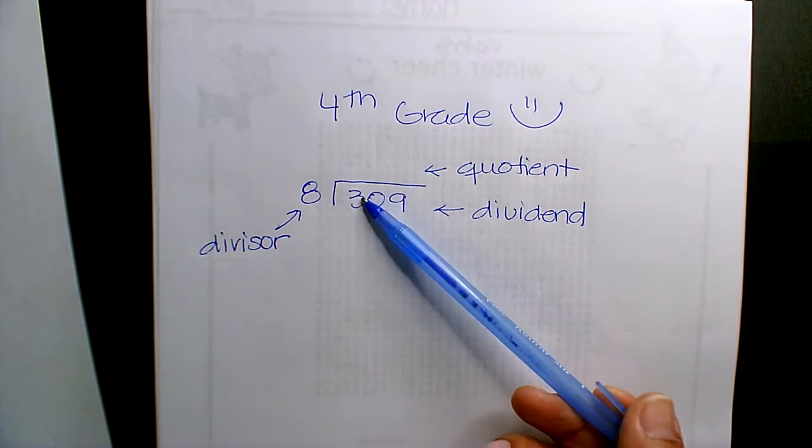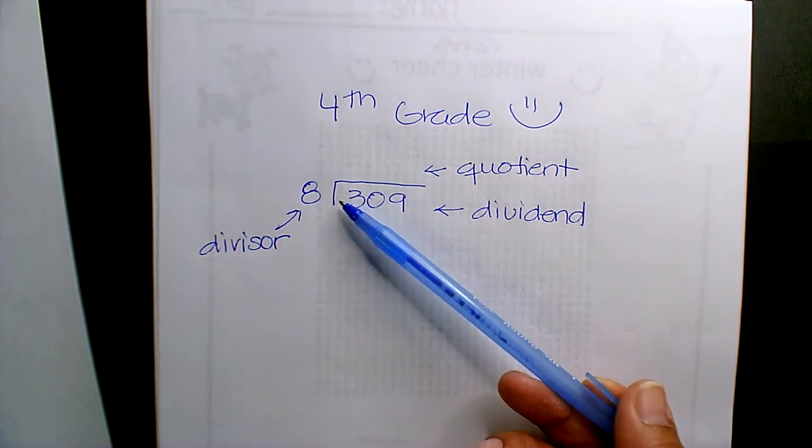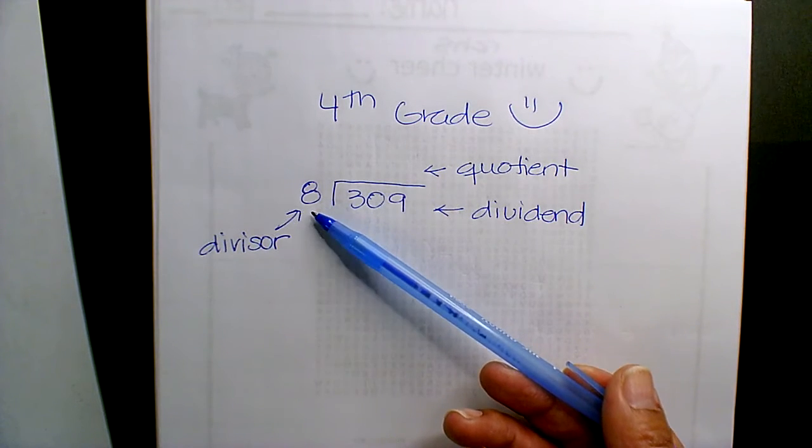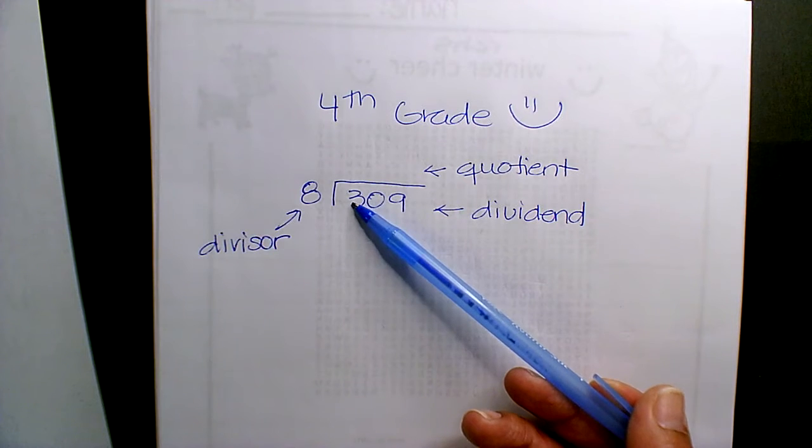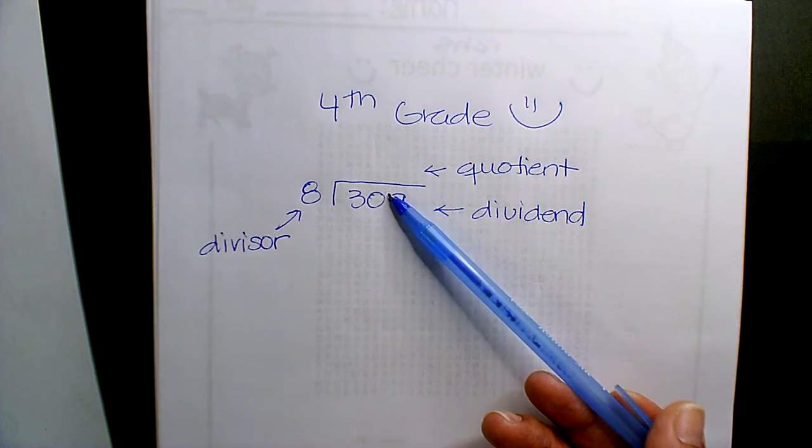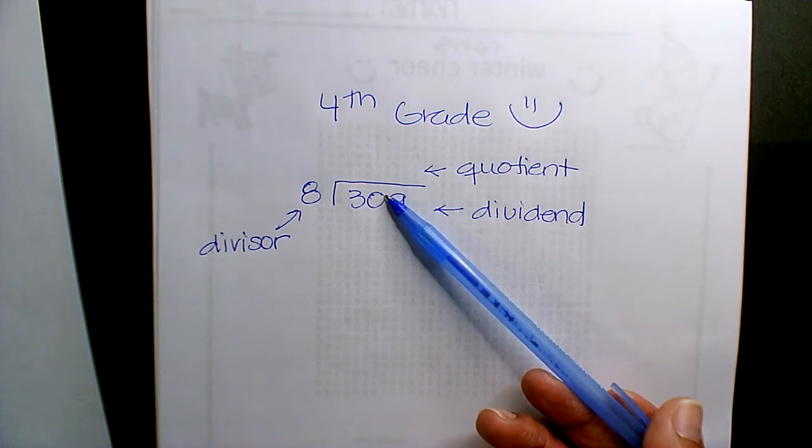Okay, if I look at 3, 3 is less than the number 8, right? Yes? So I cannot divide 8 into 3, and that's, remember, when you guys grab the next digit, and you're like, okay, let me look at 30. Does 8 divide into 30? Yes.